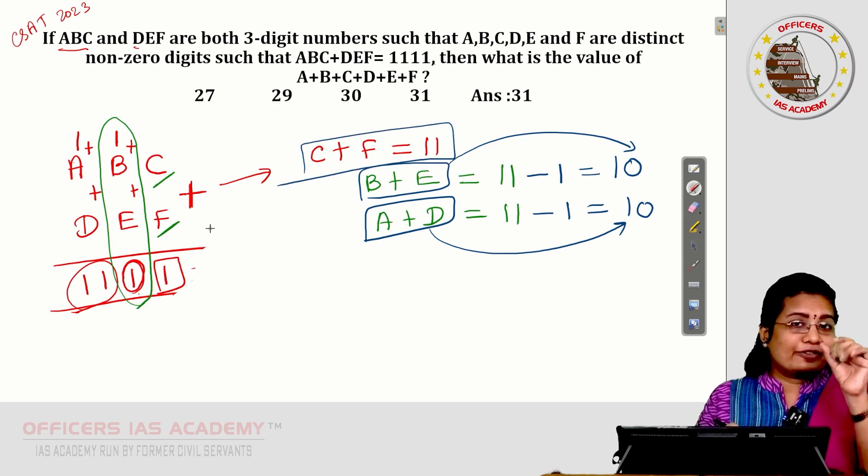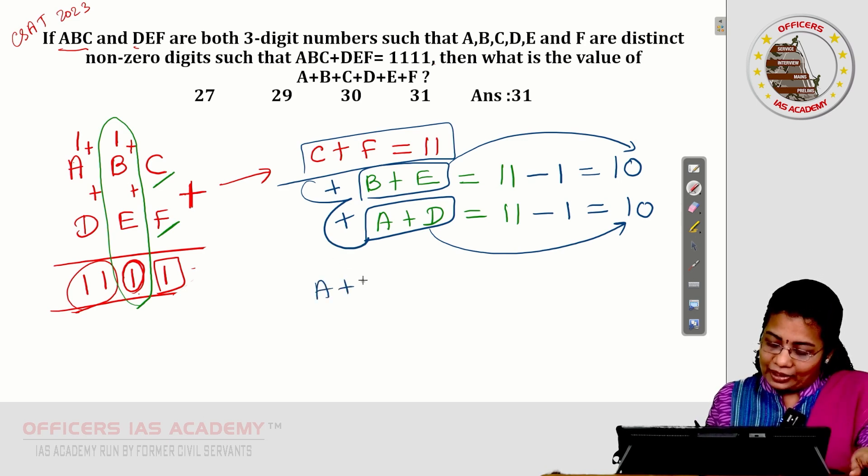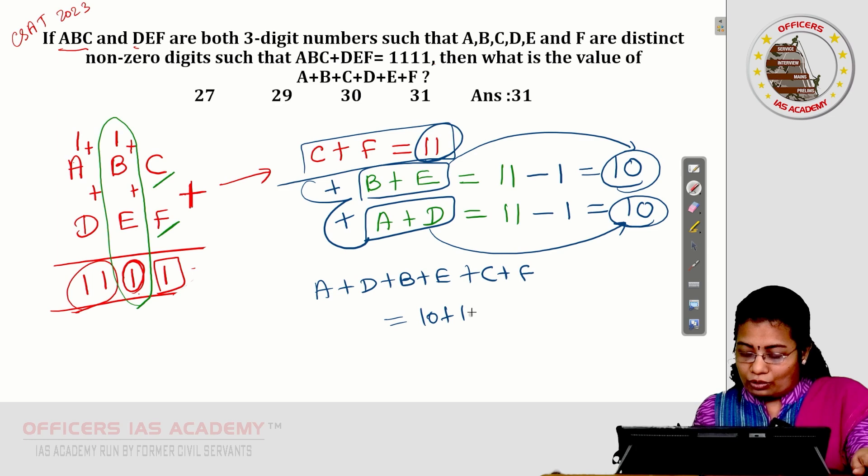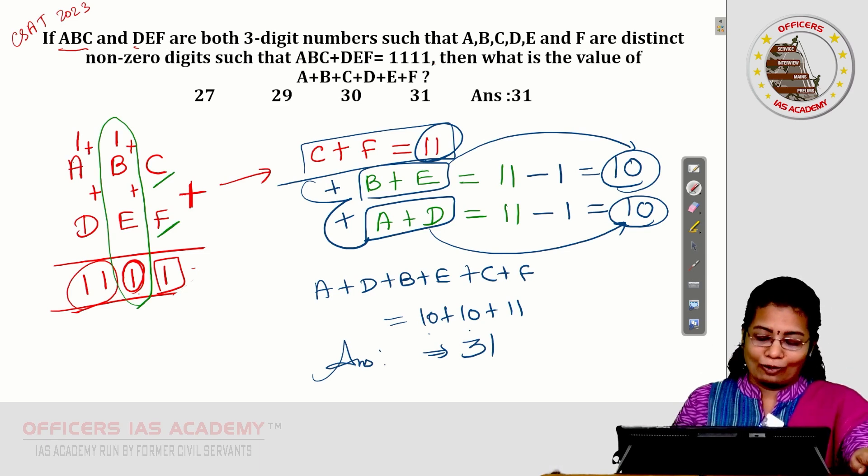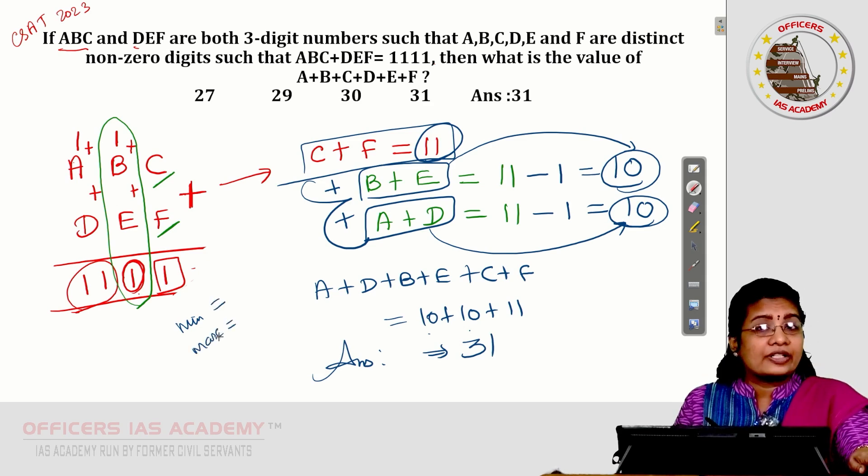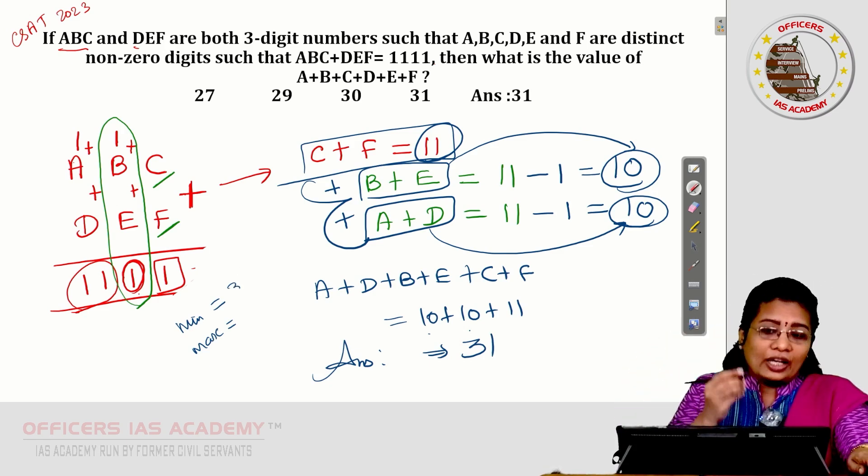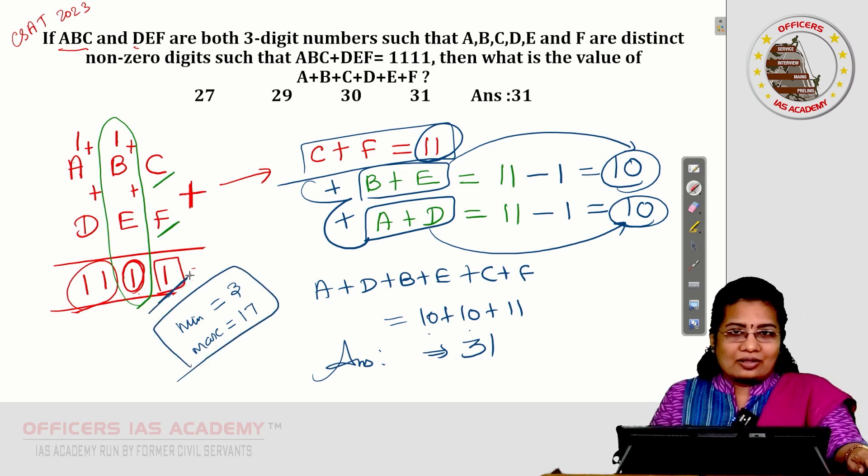Three different pattern of sums we got but we want to add all these three parts. A plus D plus B plus E plus C plus F. How much I will get is 10 plus 10 plus 11 and that is your answer in the exam. Totally we get 10 plus 10, 20 plus 11, 31 and this is my final answer in the exam. Pretty easy question if you know the pattern of minimum value and maximum value of two different single-digit numbers when these single digits are not equal to 0.